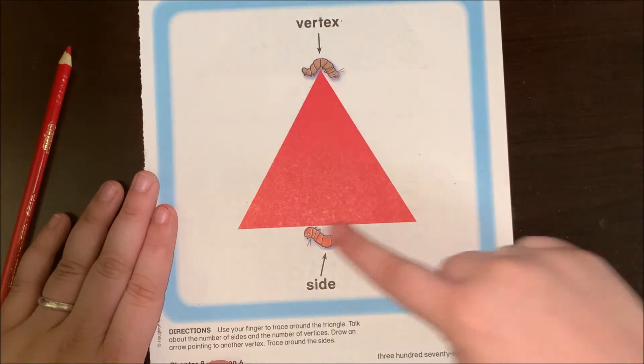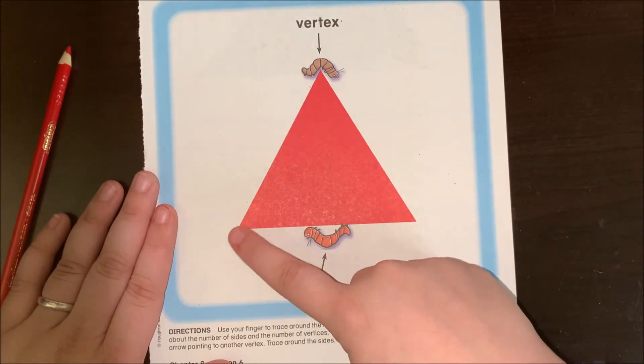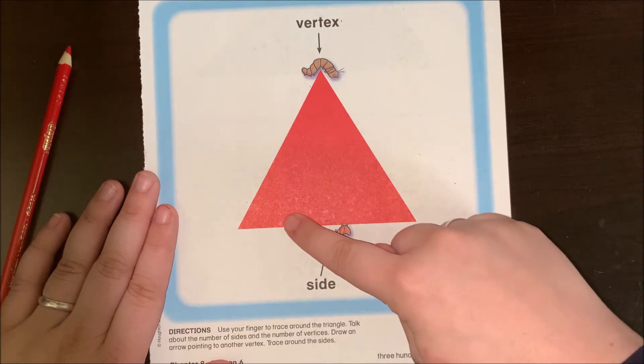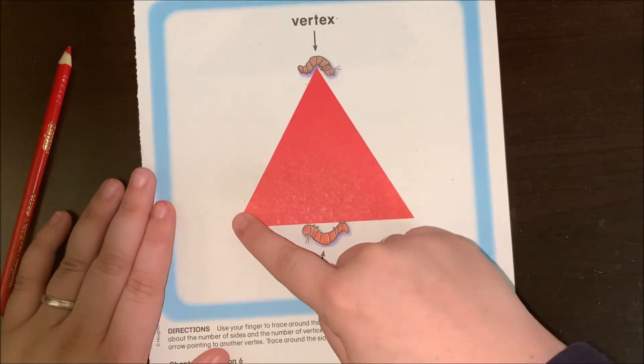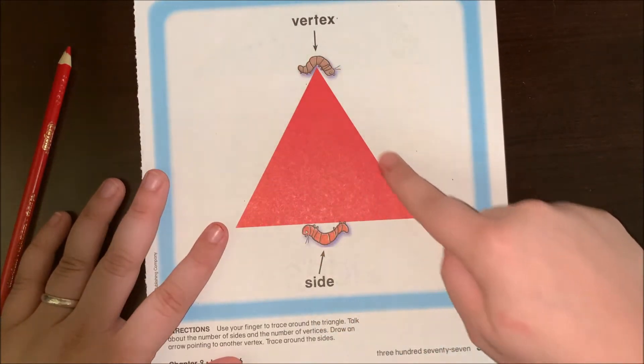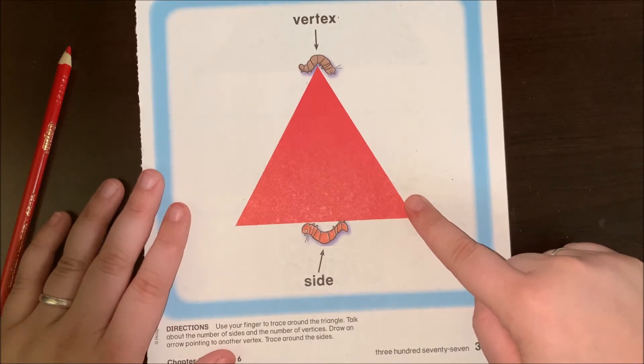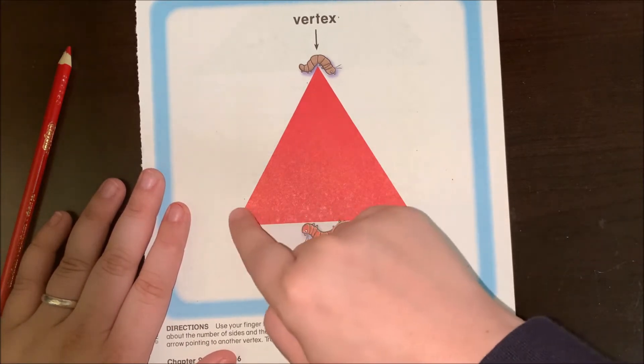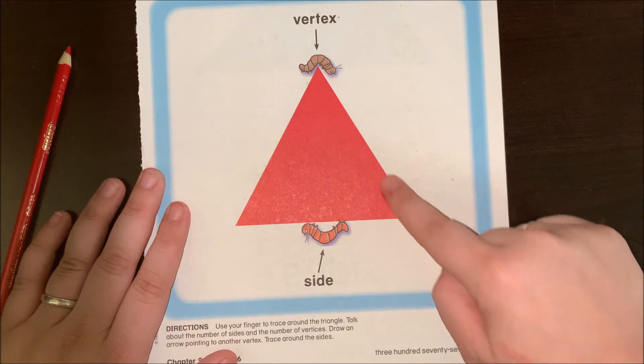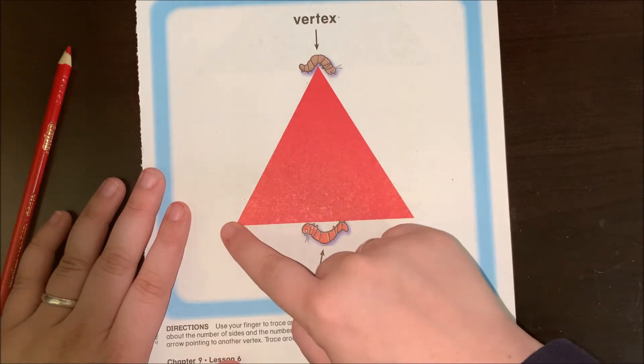That makes one, two, three vertices. And here is a side. Let's see how many sides I have. One, two, three sides. Huh, what do you notice about the number of vertices and the number of sides?